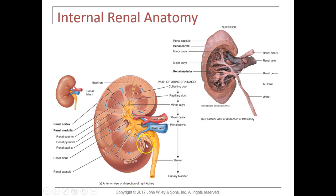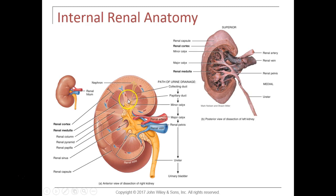The kidneys are surrounded by a capsule. Just deep to that capsule, the outer part of the kidney is called the renal cortex. Deep to the renal cortex is the renal medulla. The renal medulla is composed of darker areas called renal pyramids. The tip of a renal pyramid is called the renal papilla. In between the renal pyramids is tissue called the renal columns.